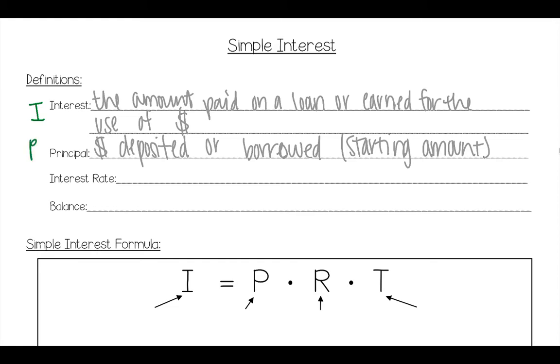Then you have your interest rate. This is always, always going to be in a percent. And this is a little R. Interest rate. So again, this is a percent. So we have to make it a decimal. And the percent of the principal paid or earned per year. Balance. This is the total in the account. AKA, this is your principal plus your interest. So your P plus your I.